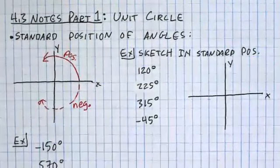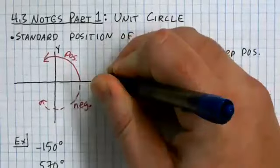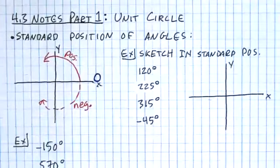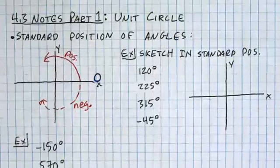I need you to know what the standard position of angles is. We consider the positive x-axis to be an angle of zero. So if they ask you to draw an angle in standard position, a zero degree angle, you're going to draw it right there, whether it's radians or degrees. An angle of zero is going to be on your positive x-axis.